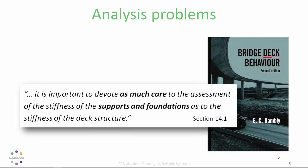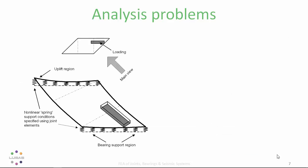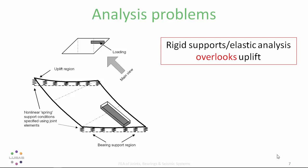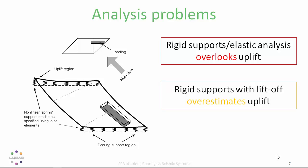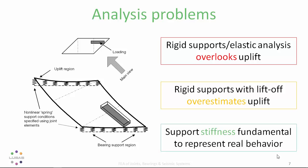Bridge Deck Behaviour, probably the most famous book on grid analysis, was about the modelling of the bridge deck rather than the whole system. Its author Hambly wrote: it is important to devote as much care to the assessment of the stiffness of the supports and foundations as to the stiffness of the deck structure. For example, a skew slab on elastomeric strip bearings: rigid support assumptions could overlook uplift or overestimate it, giving misleading results. Including support stiffness in the analysis model is fundamental.